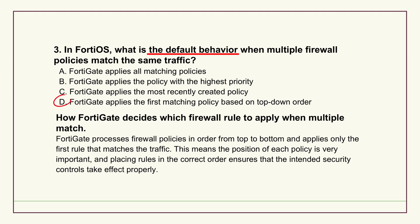Policy order matters critically. The moment traffic matches all the criteria in a policy - source, destination, service - it stops looking and applies that policy's action, allow or deny. Which means if you put a broad allow rule above a specific deny rule and the traffic matches both, the allow rule wins because it comes first. The deny rule below it basically gets ignored for that traffic. So you really have to think carefully about the order when you build your policies, otherwise you might accidentally allow things you meant to block, or vice versa.